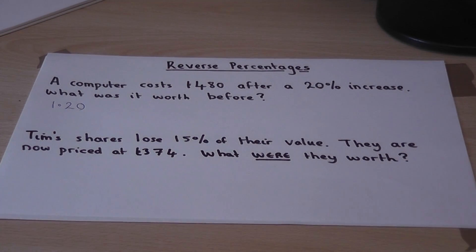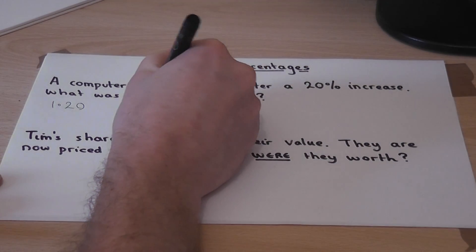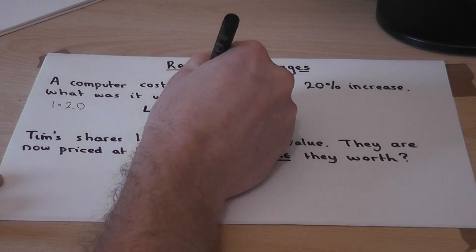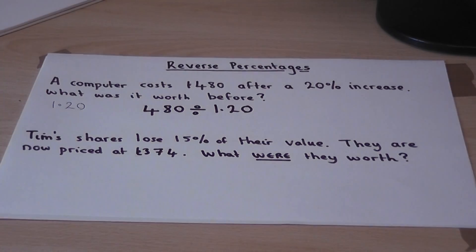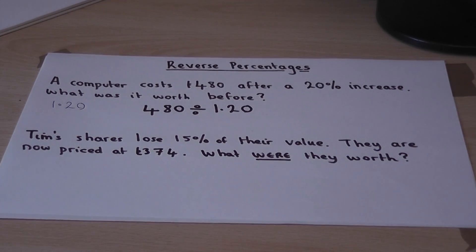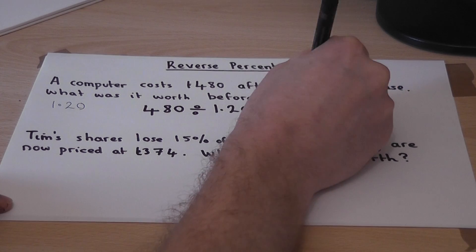To find what the amount was before the increase, we just get the new amount and eliminate the increase by dividing by the percentage equivalent as a decimal. This gives us £400.